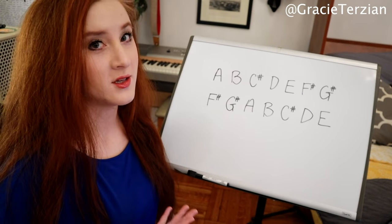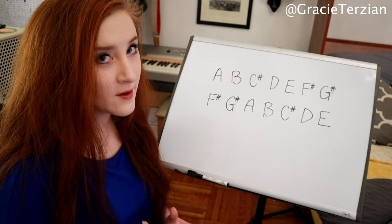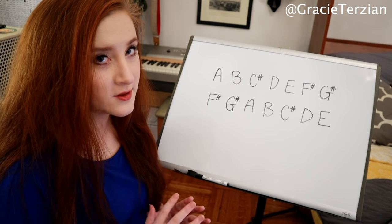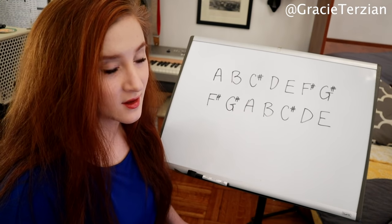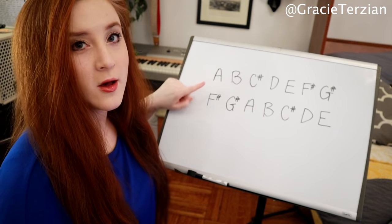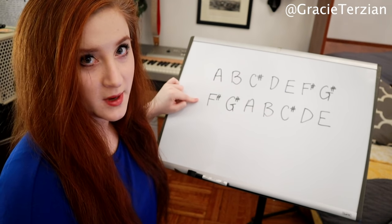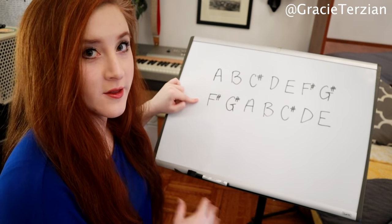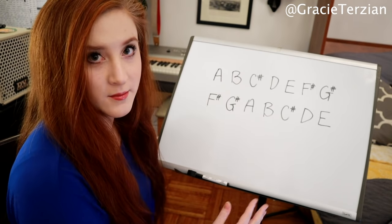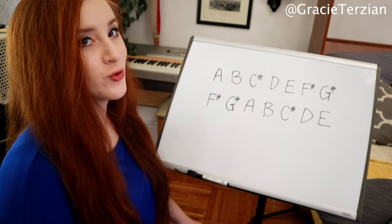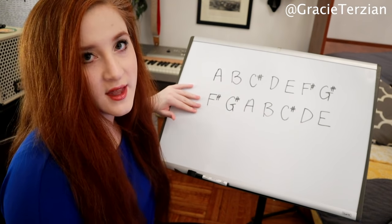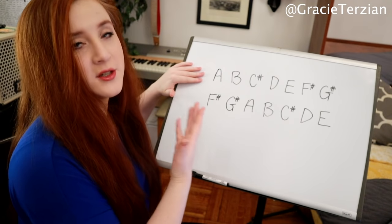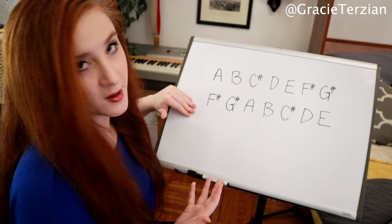Where you start a scale is really important. Two scales might have the same notes inside of them, but depending on where you start the scale, it changes the name of the scale. The scale on top is an A major scale, and the scale on bottom is an F sharp minor scale. But these two scales have a very special relationship with each other since they share the same notes inside of them. They are called relative keys. We say that F sharp minor is the relative minor of A major, and A major is the relative major of F sharp minor.